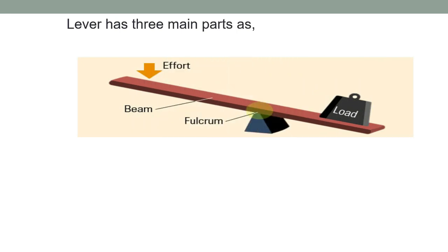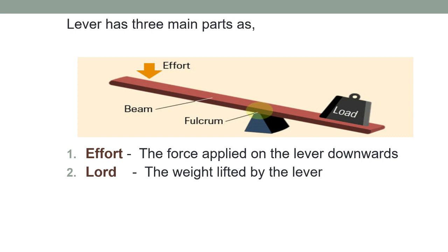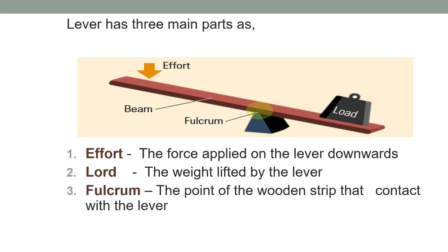This lever has three main parts: effort, load, and the fulcrum. The effort is the force that we are applying on the lever in downward direction. Load is the weight that we are going to lift by using the lever. Fulcrum is the point where the lever is pivoted and balanced.